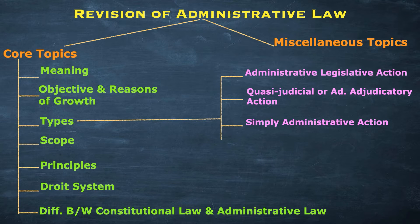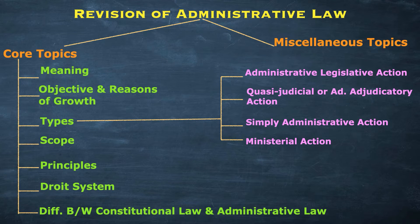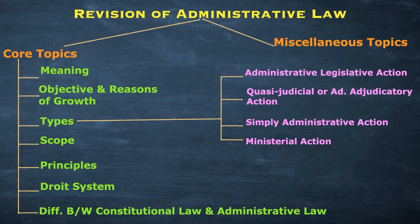The third is simply administrative action — the routine functionality that an administrative body needs to follow. Lastly, we had ministerial action, which means the act that the respective administrative body is bound to do — it is their core function. The example I gave was collecting tax by the revenue department: it is a core function that cannot be ignored or avoided. That is known as ministerial action.